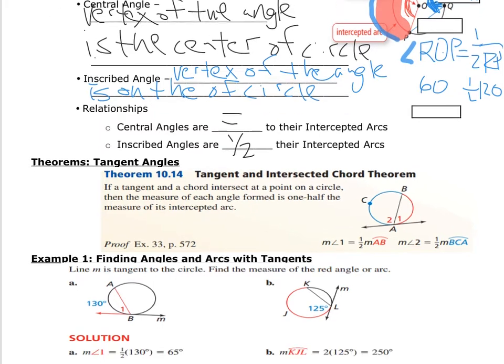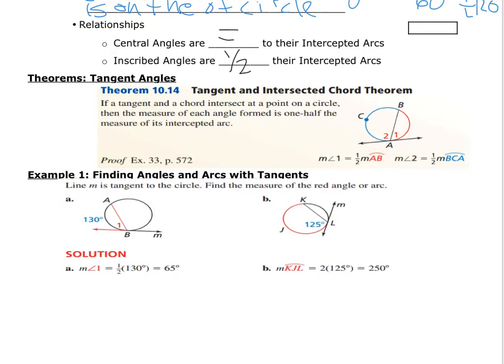We have a new theorem: the tangent-chord theorem. If a tangent line and a chord intersect at a point on a circle, then the measure of each angle formed is one half the measure of its intercepted arc. This is because the angles formed are essentially inscribed angles. The tangent line touches the circle at one point — here at point A.